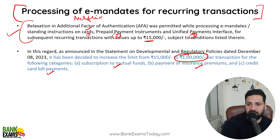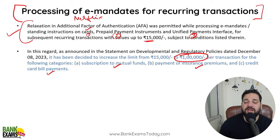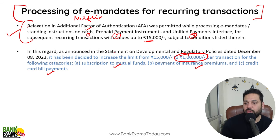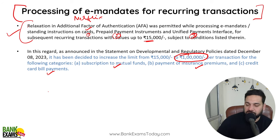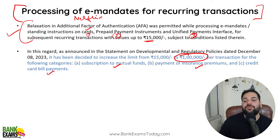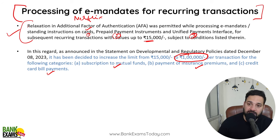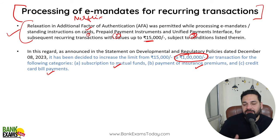Once you set up your e-mandate, in the future you don't need to re-enter your OTP. The limit has been increased for such transactions. In case of mutual funds, insurance premiums, and credit card transactions, the limit has been increased to 1 lakh rupees. So if you set an e-mandate for 50,000 rupees to be cut every month for mutual funds, it will automatically cut from your UPI without submitting any OTP. The same applies for insurance premiums and credit card bills.